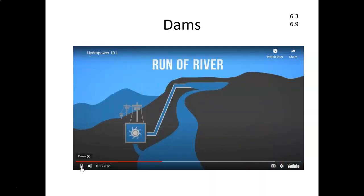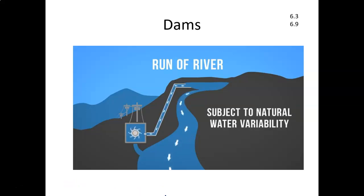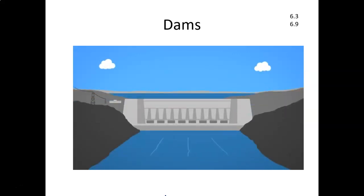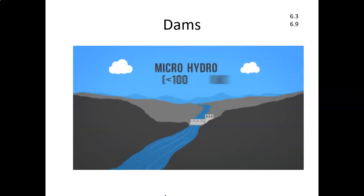The second form of hydroelectricity production is run of river hydro, which still uses turbines and generators but relies on natural water flow rates of rivers, diverting just a portion of the water through turbines. Because run of river hydro is subject to natural water variability, it is more intermittent than dammed hydro. There are various sizes of hydro plants: large hydro (greater than 30 megawatts), small hydro (100 kilowatts to 30 megawatts), and micro hydro (less than 100 kilowatts).